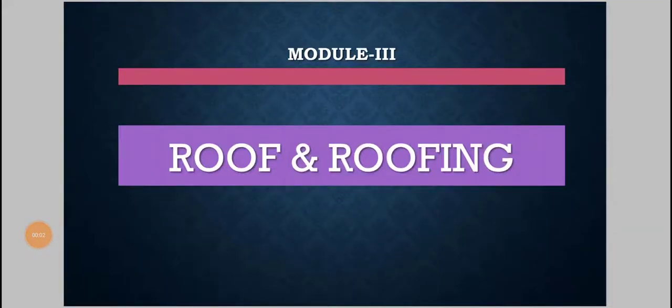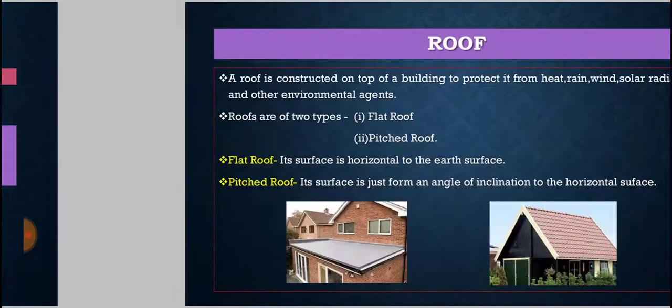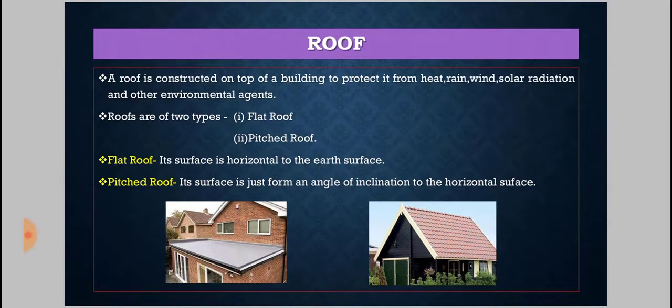In this video we will discuss about roof and roofing. A roof is a structural member which is generally constructed above the superstructure and which protects the occupants from external environmental impact such as solar radiation, rain, and wind. It may be horizontal or inclined depending on its placing position with respect to ground level.